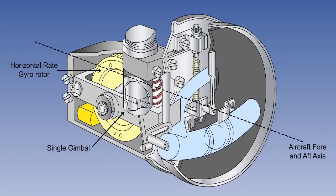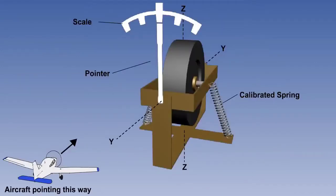The turn indicator uses a rate gyro aligned to the aircraft's horizontal axis. The rate gyro has only one gimbal, and is therefore classed as having only one degree of freedom. The way it works is that if the aircraft banks without turning, the gyro axis has the freedom to remain horizontal in its gimbal.